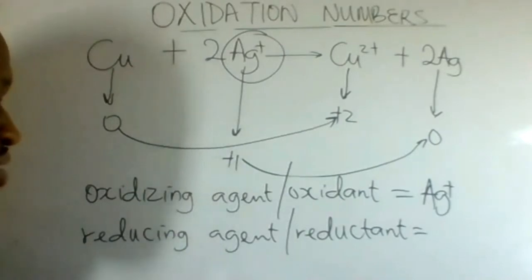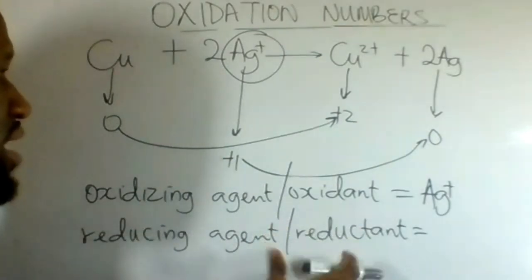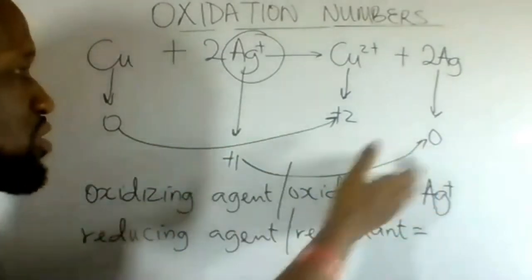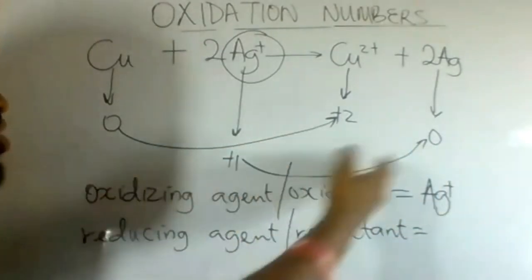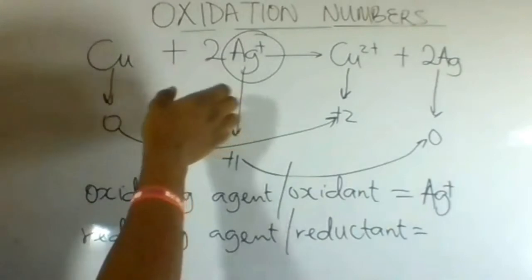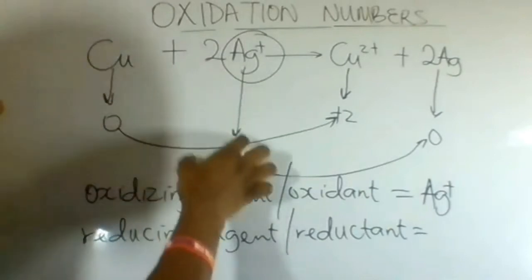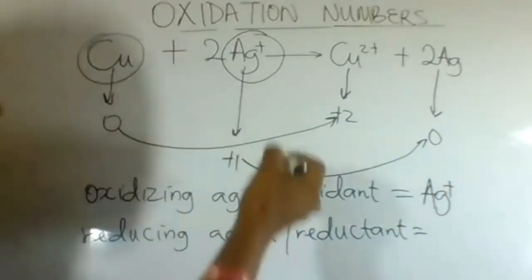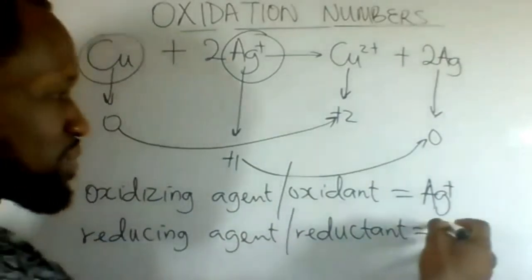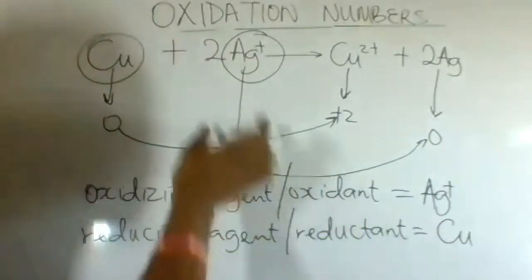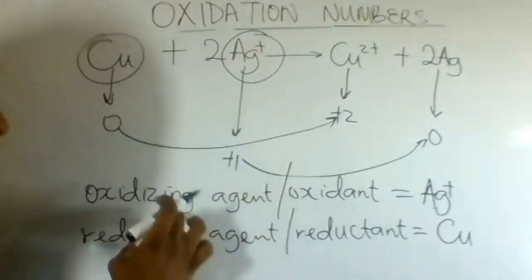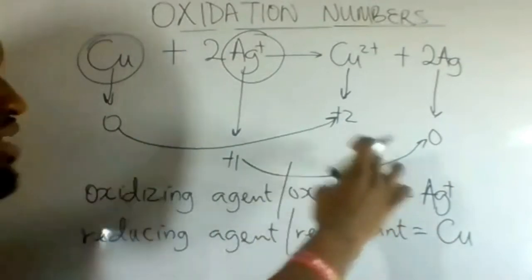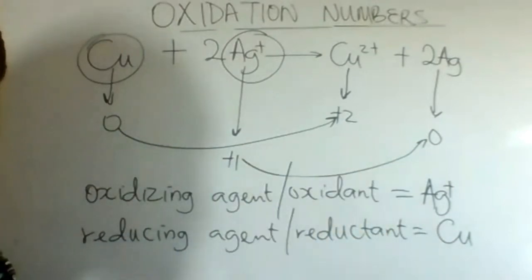What about the reducing agent or the reductant? Silver reduced from plus one to zero. What made silver be reduced? Copper reacted with silver and silver reduced. Therefore, copper is the reducing agent — the substance that causes the reduction of silver is copper. Silver ion is the oxidizing agent.